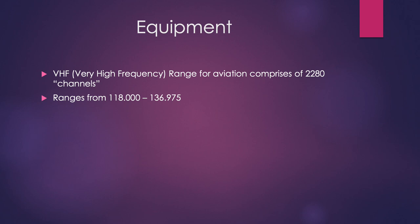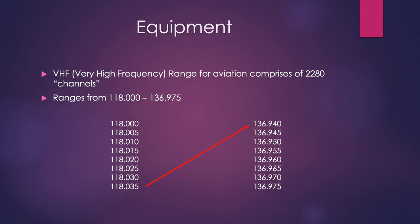There are different frequencies associated with radios, but generally for aviation we use VHF — Very High Frequency. This comprises 2,280 channels ranging from 118.000 all the way up to 136.975. The spacing between each individual channel is 0.005, so from 118.000 it goes up 0.005 each time. Each of those channels is an individual station, which may be associated with a particular aerodrome or service.